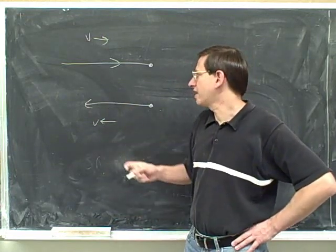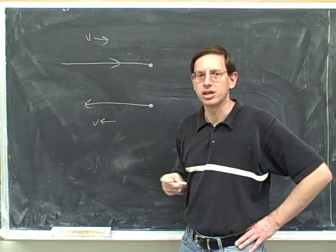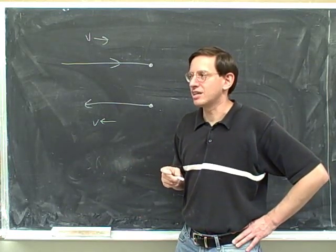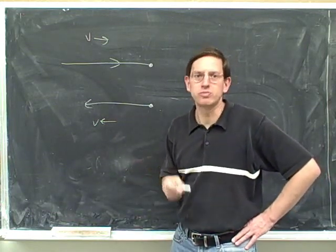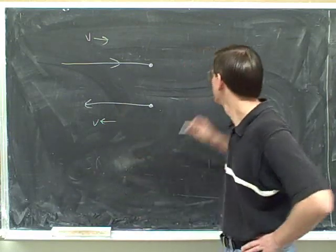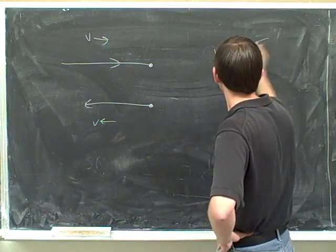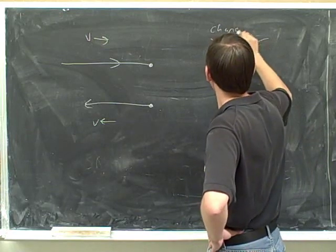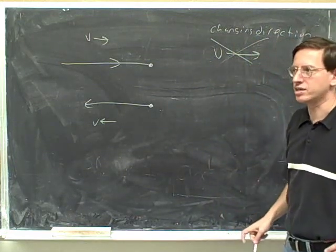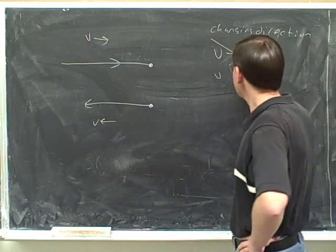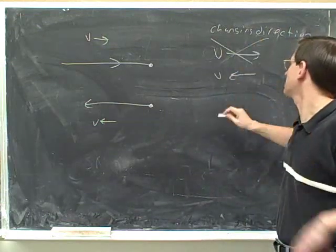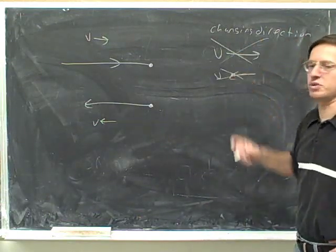But what direction is the velocity in at the instant that we change our direction? Well, it doesn't make sense to say the velocity is to the right when you're changing direction, because when you're changing direction, you're not really moving right anymore — so how could your velocity be to the right? Also, if you're changing direction, it doesn't make sense to say the velocity is to the left. If your velocity was to the left, you'd be moving left — you wouldn't be changing direction. So we can't have a velocity to the right, and we can't have a velocity to the left.